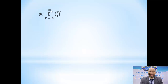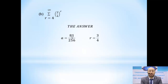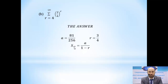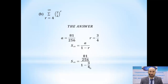For another sigma notation example, the sum runs from r = 4 to infinity. To find a, we substitute r = 4 into the expression, which gives (3/4) to the power of 4 = 81/256. The common ratio is 3/4. Now substituting into the formula: sum to infinity = (81/256) over (1 minus 3/4) = (81/256) over (1/4). Type it in your calculator and you get 81/64.